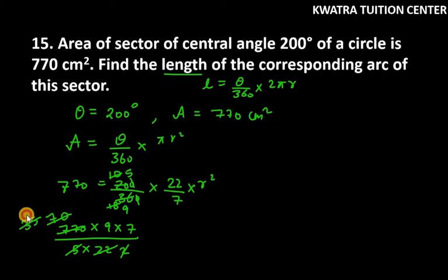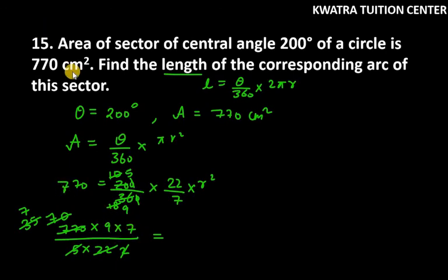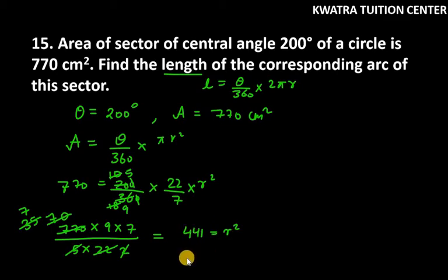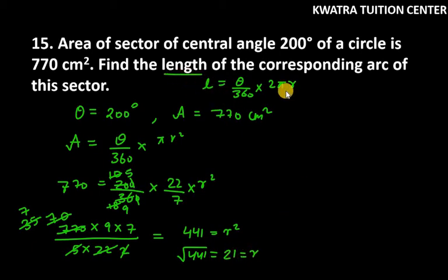Then 5 and 35 cancel to give 7. So we are left with 7, 7, and 9. 7 × 7 is 49, and 49 × 9 is 441. On the right-hand side we have r², so bringing r² over we take the square root, and the square root of 441 is 21. So the radius is 21 centimeters.